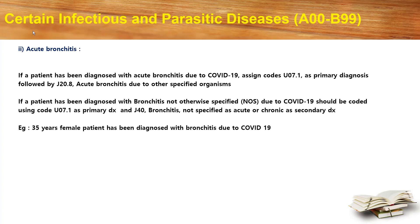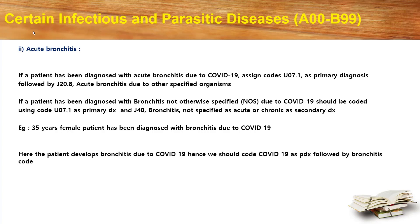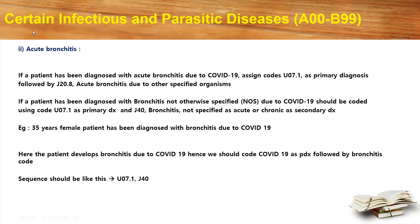Let's look at an example. A 35-year-old female patient has been diagnosed with bronchitis due to COVID-19. Here the patient developed bronchitis due to COVID-19. Hence we should code COVID-19 as primary diagnosis followed by the bronchitis code. The sequence would be U07.1 and J40. U07.1 is COVID-19 and J40 is bronchitis not specified as acute or chronic.